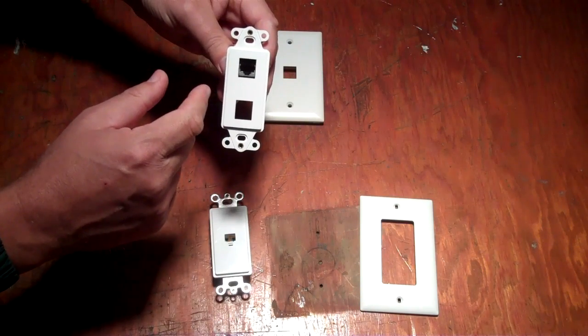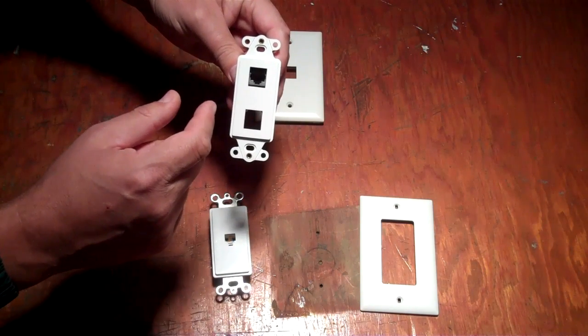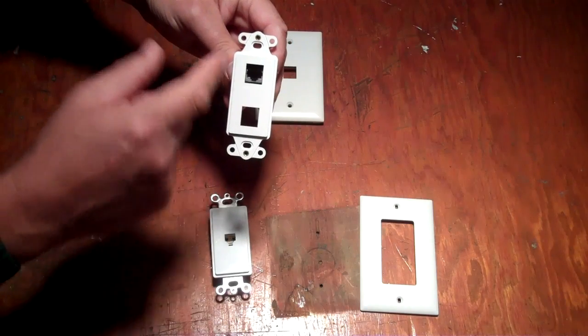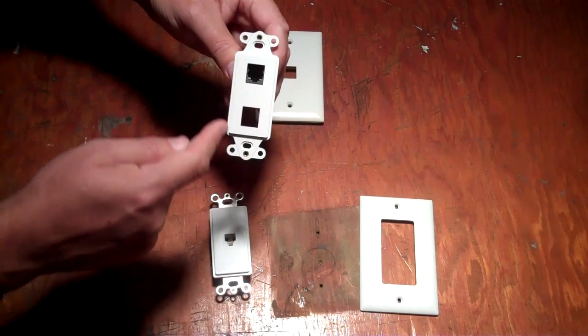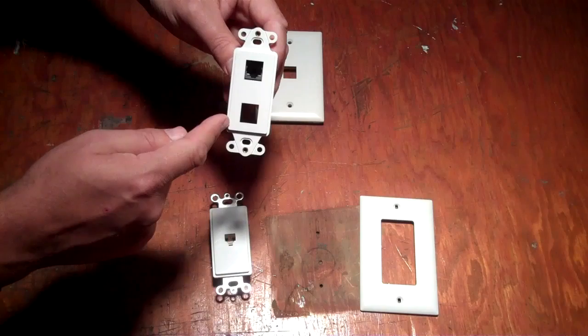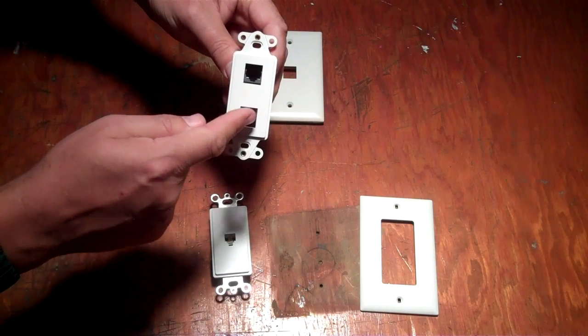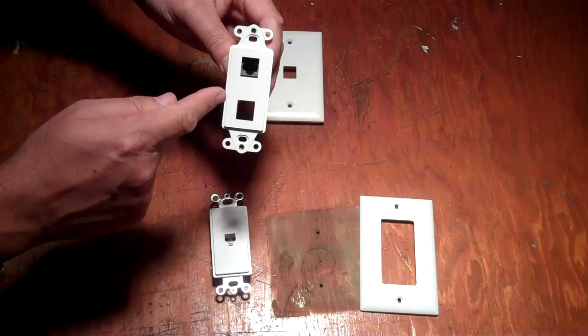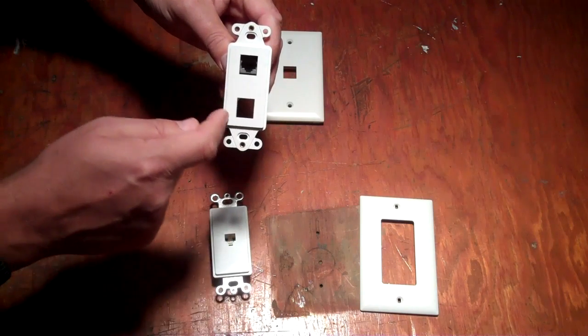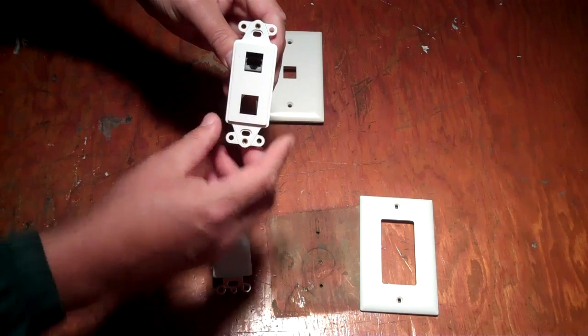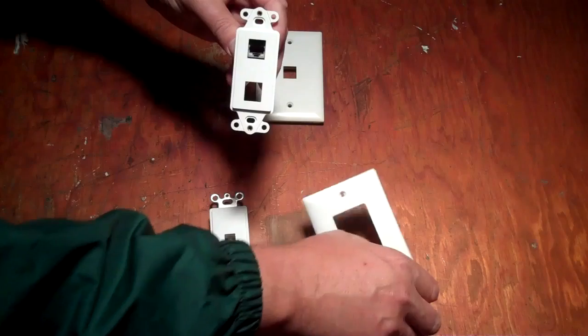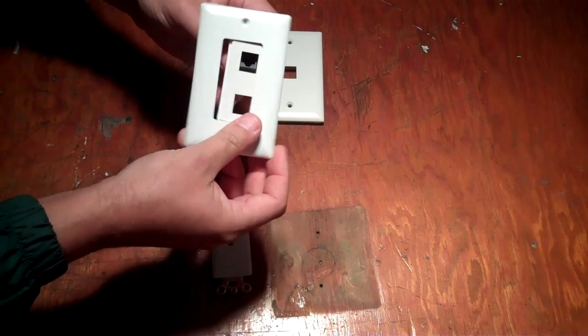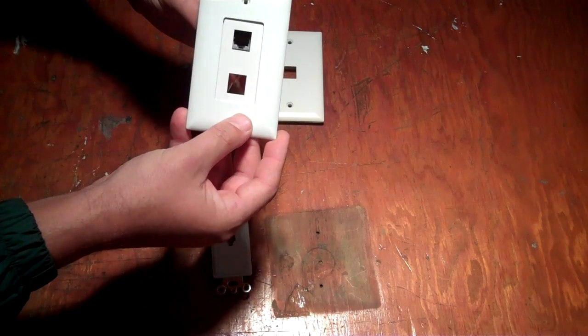I'm not going to snap it in on this video because sometimes they're tricky to remove once they're snapped in place. But I'm using this particular Decora as an example because you could put a cable TV outlet here. Or you could put a second phone jack here. Or you could put some other type of structured wire insert in here. And then again, to finish this one off, this plate goes right over like that.